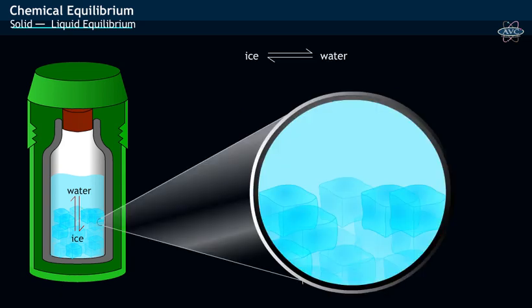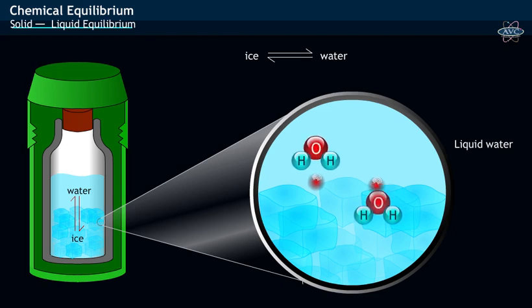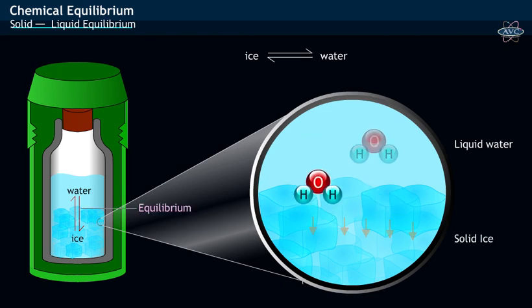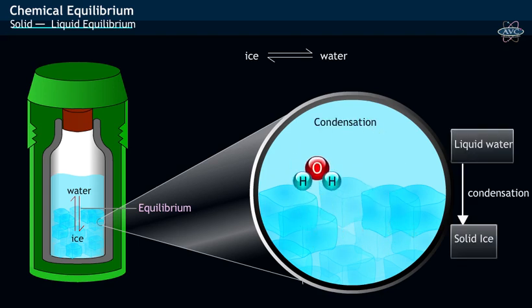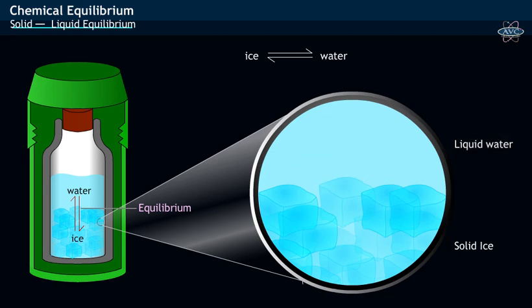On close observation at the boundary between ice and water, it may be seen that some liquid water molecules get attracted to the solid ice molecules - that is, condensation process occurs. At the same time, few molecules of solid ice escape into liquid phase.